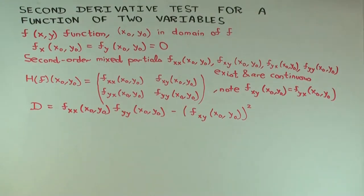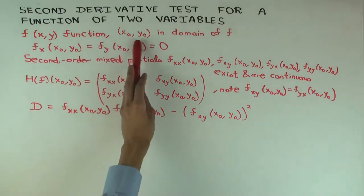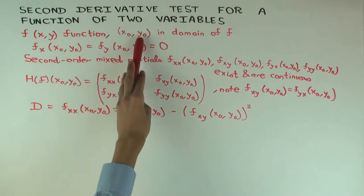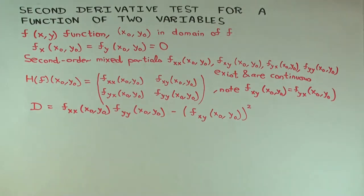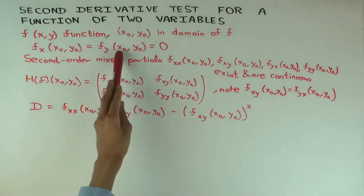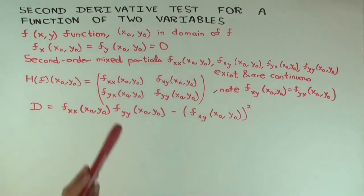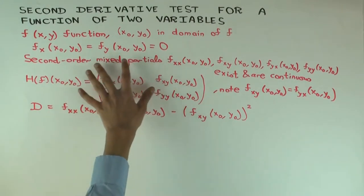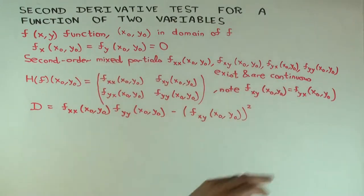In this talk, I'm going to discuss the second derivative test for a function of two variables. So f is a function of two variables. x naught, y naught is a point in the domain. I'm assuming it's a critical point, which means both the first partials are zero and continuous. I'm actually assuming something stronger: that all four of the second order mixed partials exist and are continuous.